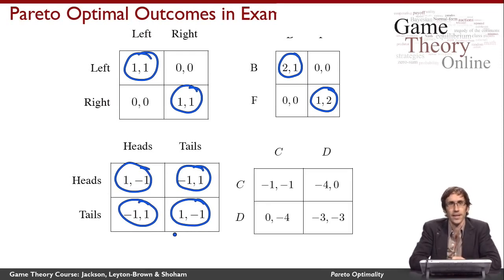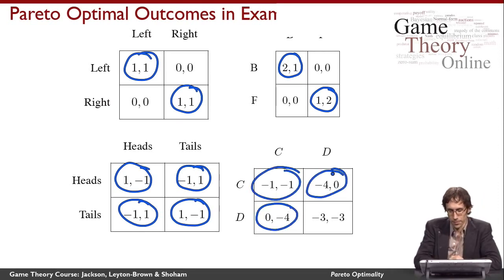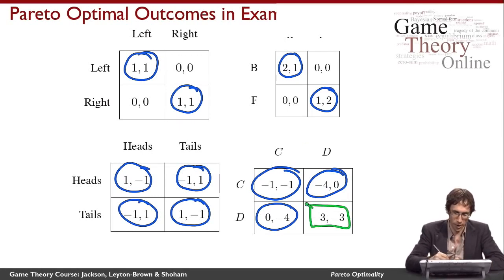Finally, we have the prisoner's dilemma game. It turns out that all but one outcome is Pareto optimal. This one outcome is not Pareto optimal because it is Pareto dominated by this other outcome.